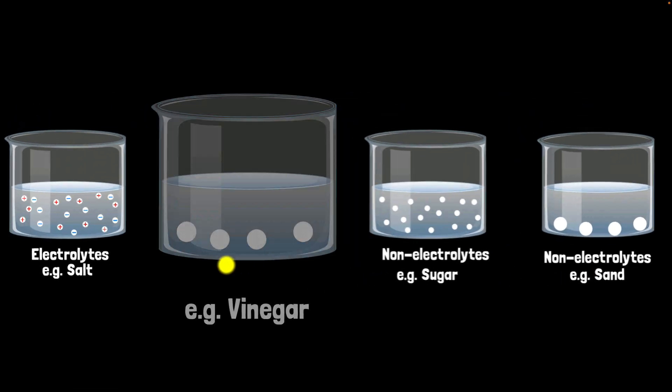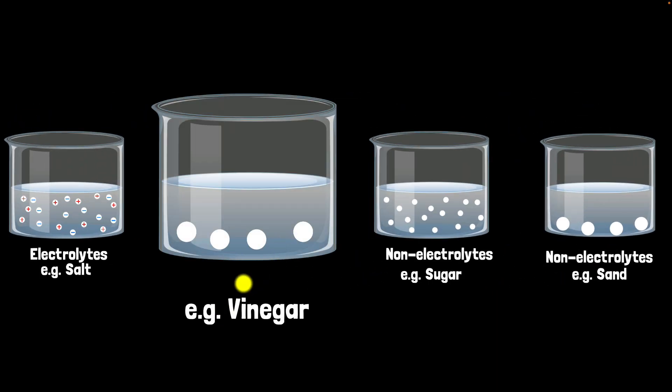But what if you were to pour vinegar in water? You know why I'm considering vinegar? Because vinegar partially breaks apart into charged particles. Not all of them, but partially. So you do get some electrolytes. So if you were to put those same wires over here, it will conduct electricity, but not as much as this one would. And so the bulb would glow a little faint. So what should we call this? Well, we call this weak electrolytes.